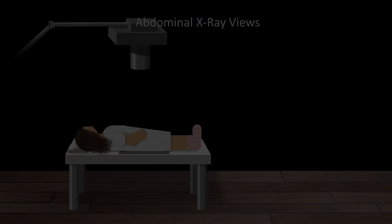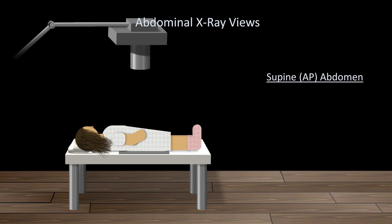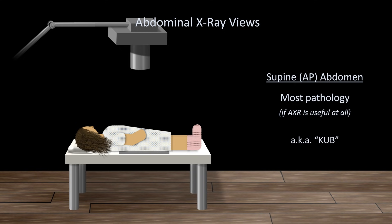Now let's talk views. There are three main ones. The first is by far the most common: the supine AP view, meaning that the x-ray beam travels from the anterior side of the patient to the posterior side. This view is useful for identifying most pathology in situations where abdominal x-rays are useful at all. The term supine AP view is often used interchangeably with the acronym KUB, which stands for kidneys, ureters, and bladder. Some radiologists object to using these terms as true synonyms, but to a non-radiologist this difference is semantics, provided that an accurate indication is placed in the x-ray order so the radiology technologist can shoot the proper film.